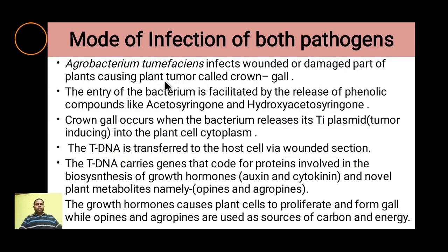Regarding how infection occurs: first, a wounded part of the plant is infected by this organism. The plant produces phenolic compounds called acetosyringone and hydroxyacetosyringone when it is wounded. These two chemicals attract the bacteria for infection.